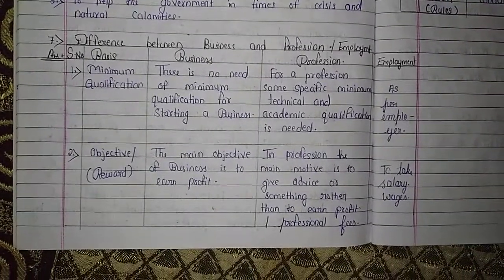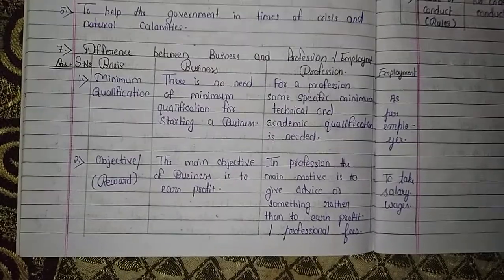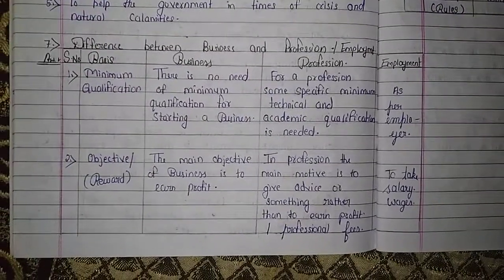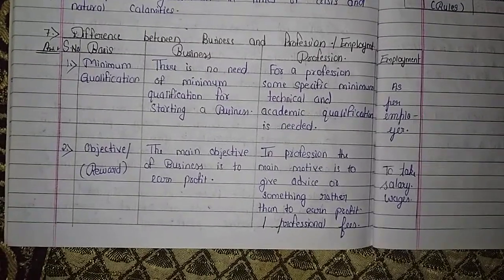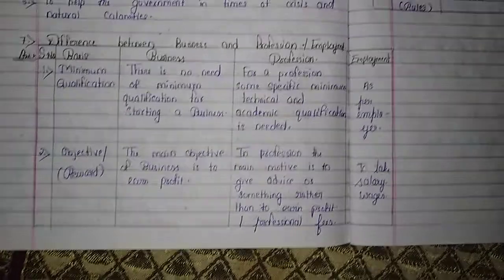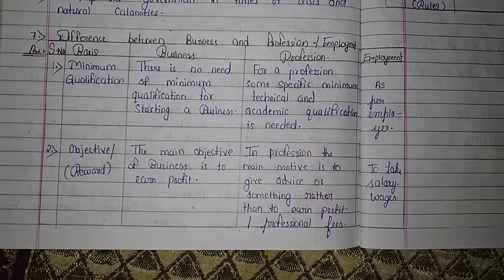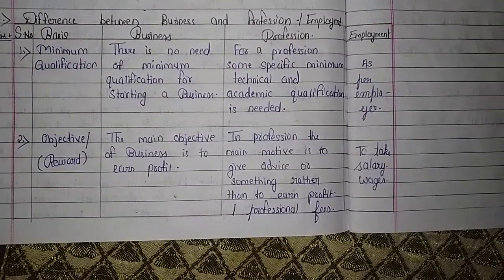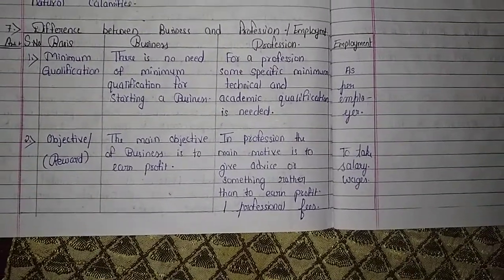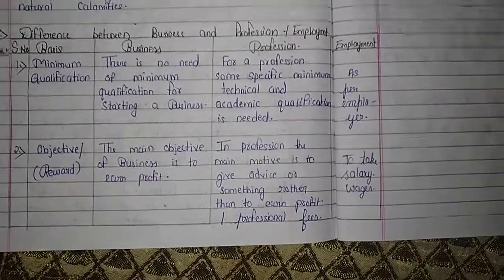The second basis is objective — in other words, reward. We do business to earn profit. In profession, the main motive is to give advice or services rather than to earn money, and in return they get professional fees. The objective of employment is to take salary or wages.